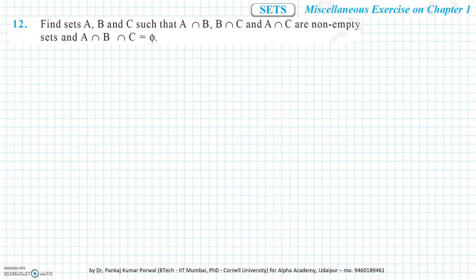In this question we have to find three sets, set A, set B, and set C, such that A intersection B, B intersection C, and A intersection C are non-empty, but the intersection of A, B, and C is an empty set.